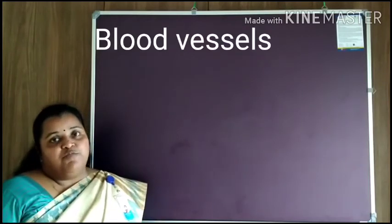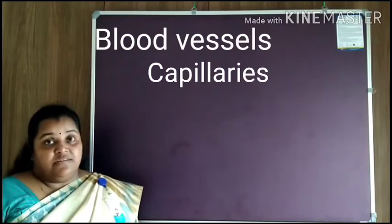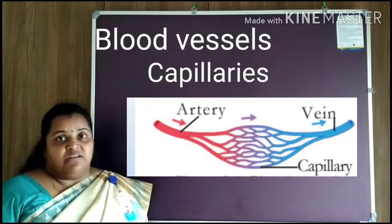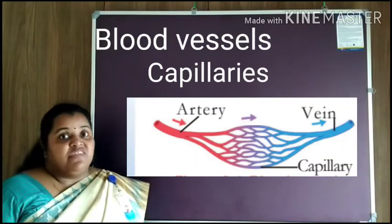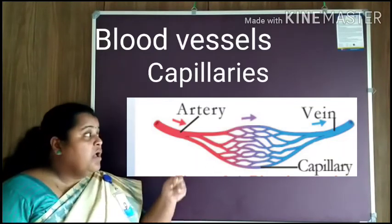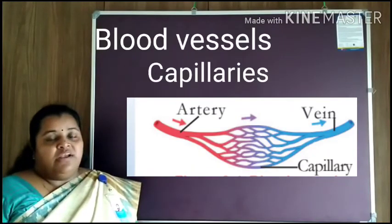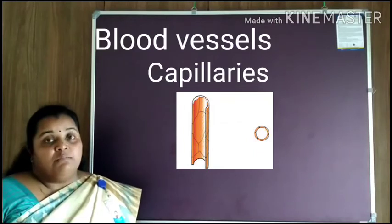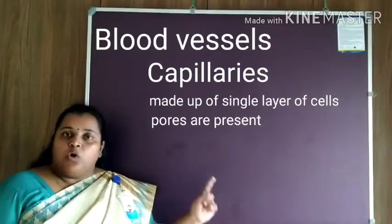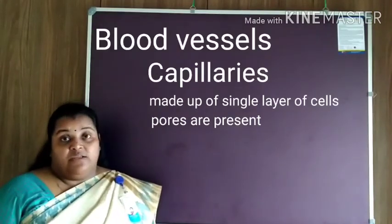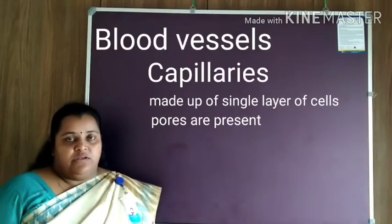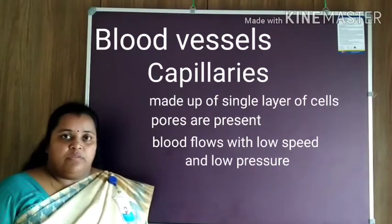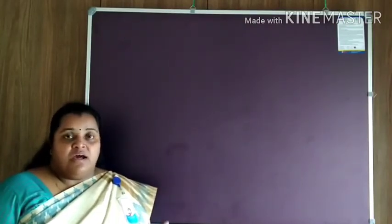The third type of blood vessels is known as capillaries. Capillaries are fine blood vessels which connect both veins and arteries, forming a network between them. The wall of the capillaries is made up of a single layer of cells with minute pores on it. The blood flows with very low speed and low pressure. So, the three types of blood vessels are arteries, veins, and capillaries.